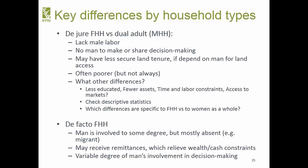For the de facto female-headed household, the man is involved to some degree but mostly absent — for example, a migrant. They may receive remittances, which relieves some wealth or cash constraints, but there is variable involvement in decision-making. The key point — and the reason I'm spending time here — is that sometimes people put de jure and de facto together, but their constraints are actually different, both institutionally and in terms of resources and interests. To do a proper gender analysis, you need to be cognizant of the household types: why is it a female-headed household?